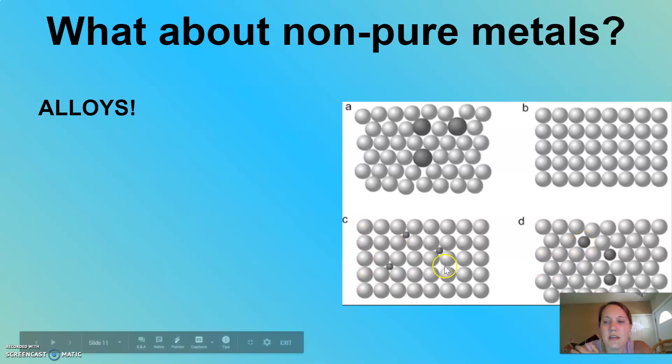And then you can see in C here, there's no disruption to the shape or the arrangement. Everything is still very linear and very organized. And the darker gray metal just kind of fits in the spaces. So those are just different types of alloys. You don't need to know the different types of alloys, but know that not all alloys are made the same.